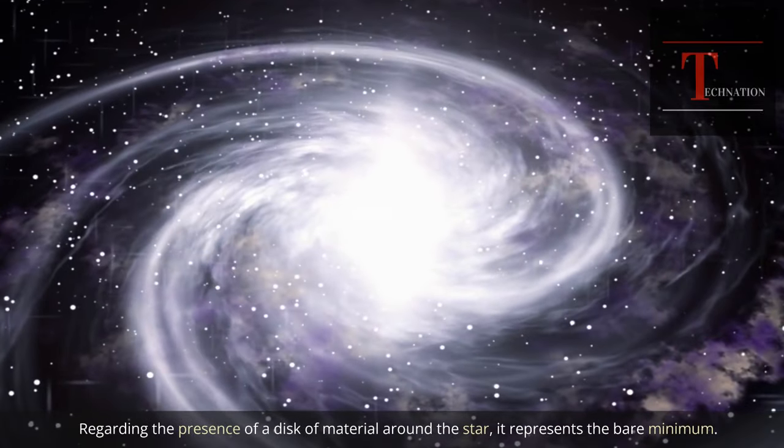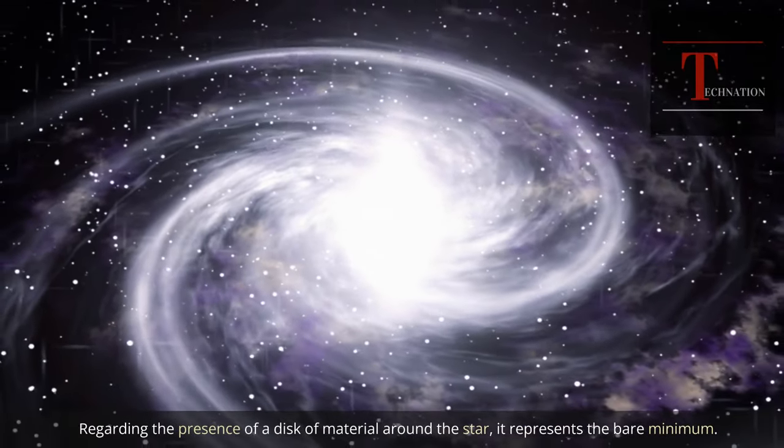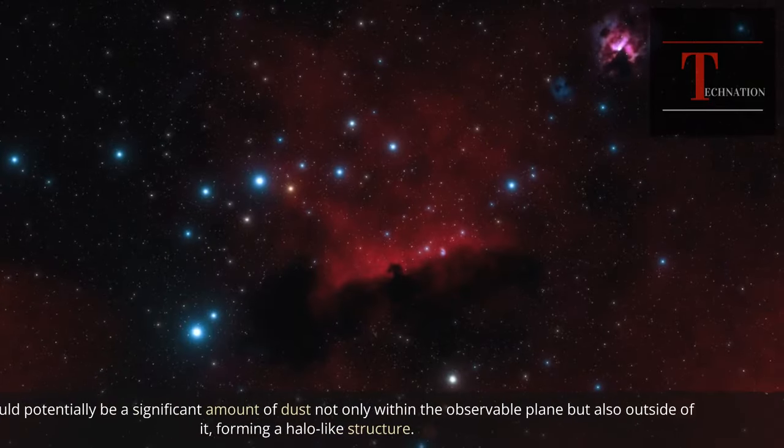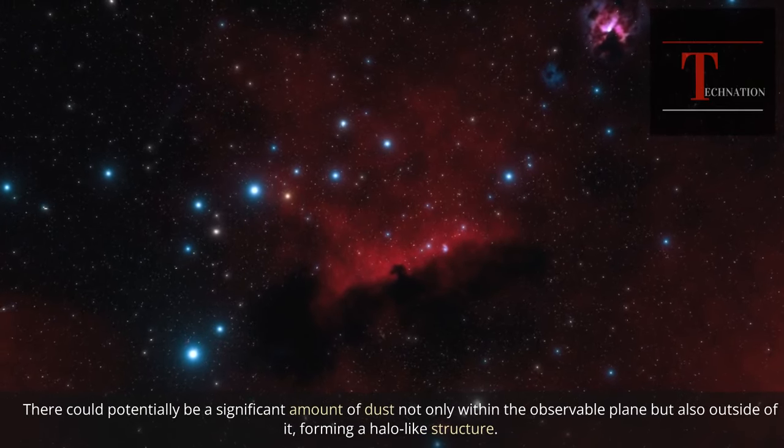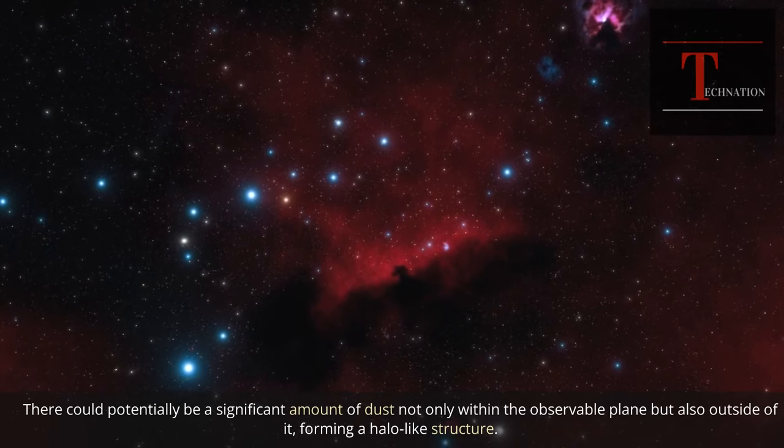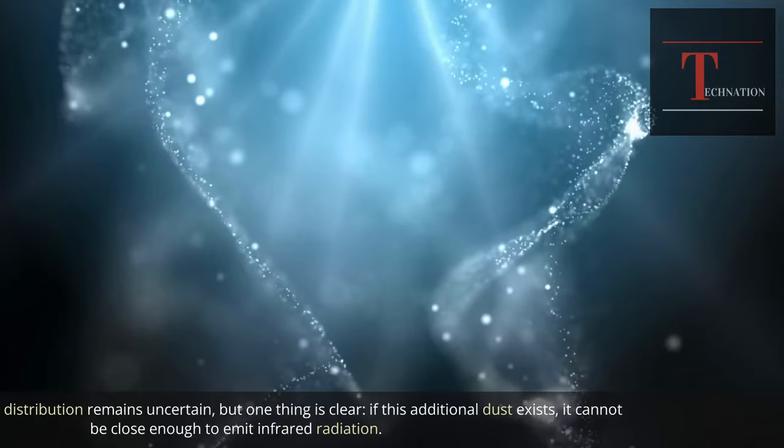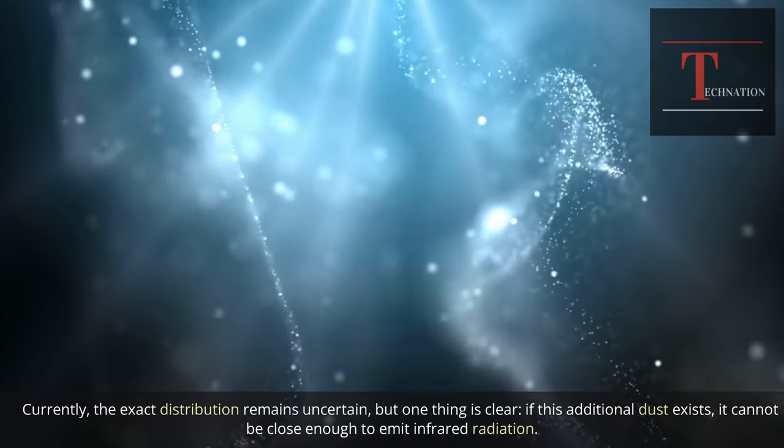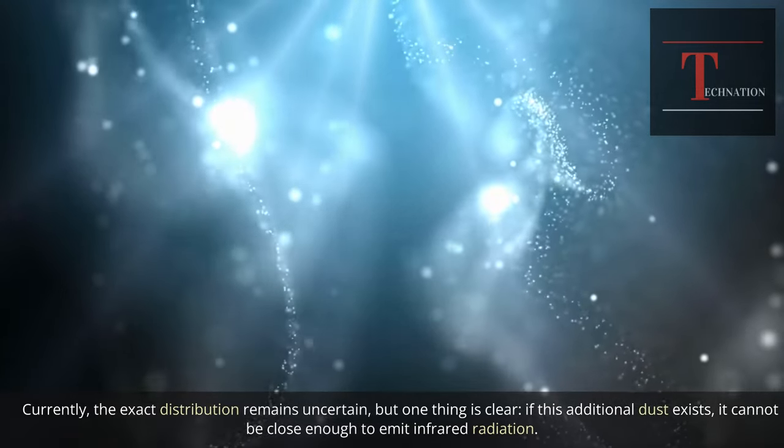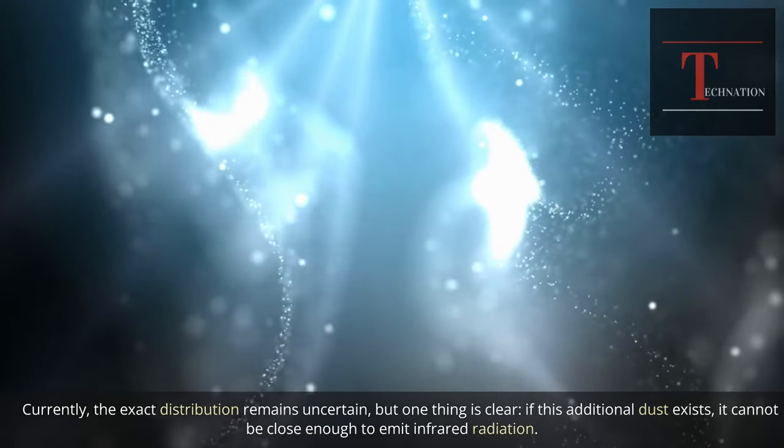Regarding the presence of a disk of material around the star, it represents the bare minimum. There could potentially be a significant amount of dust not only within the observable plane but also outside of it, forming a halo-like structure. Currently, the exact distribution remains uncertain, but one thing is clear: if this additional dust exists, it cannot be close enough to emit infrared radiation.